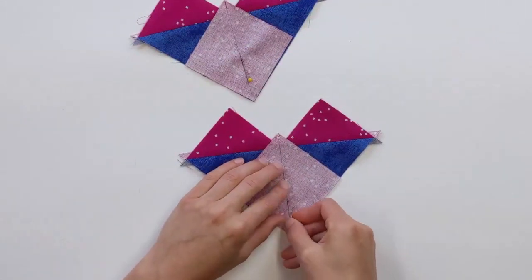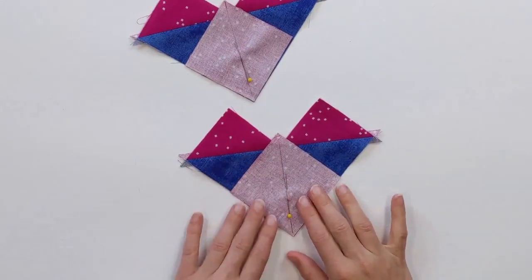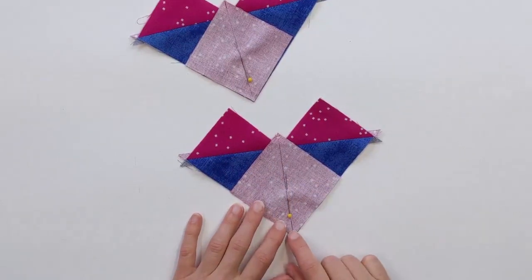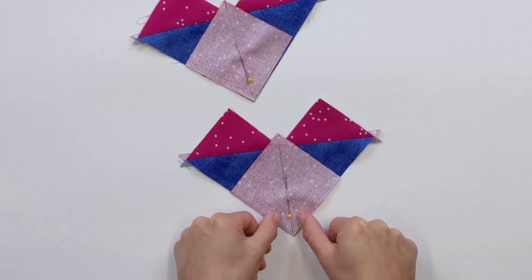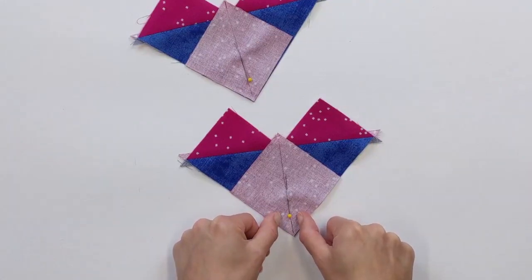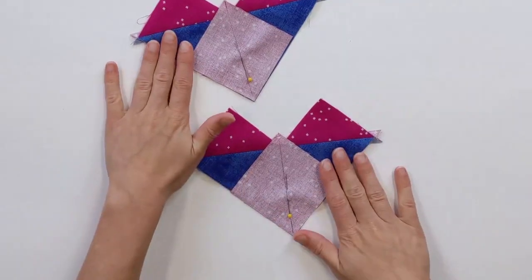There we go. So, I'm going to take these over to my sewing machine and I'm going to sew a quarter of an inch seam away from the line on both sides. So just like we did for the first part, now we're going to repeat that for both of these units.